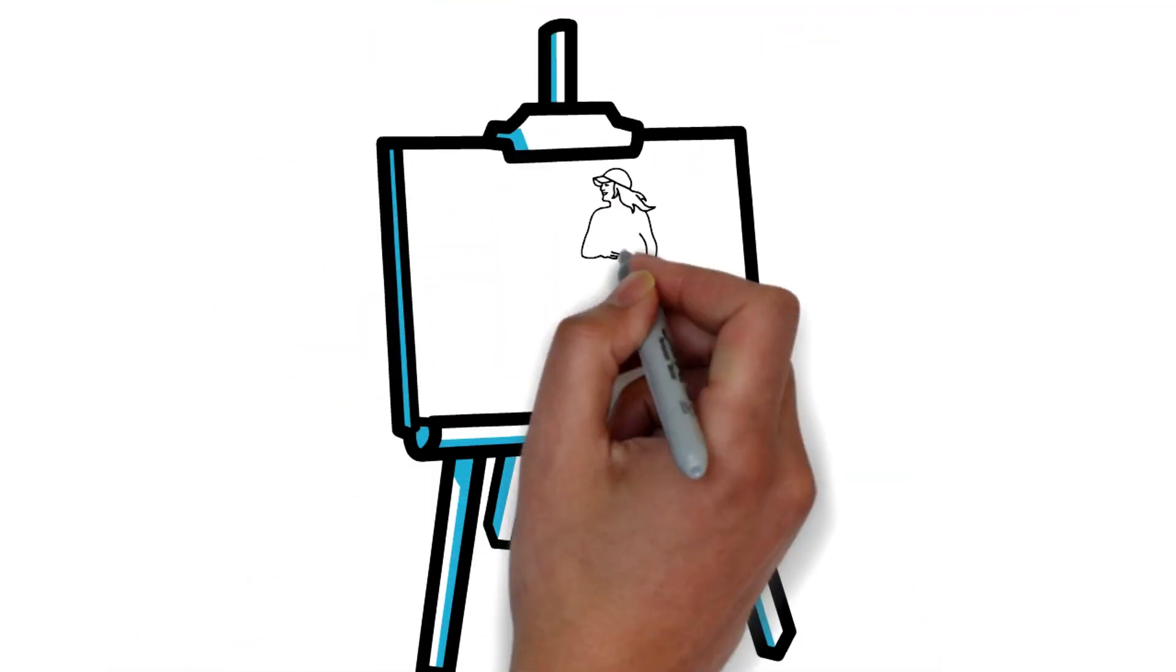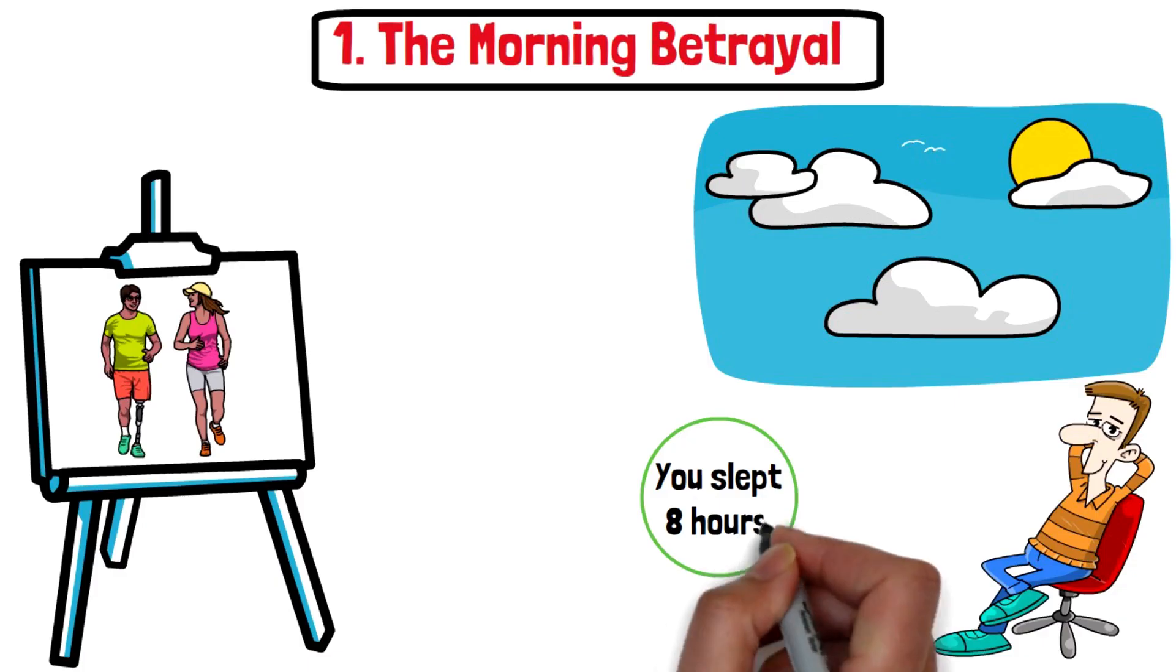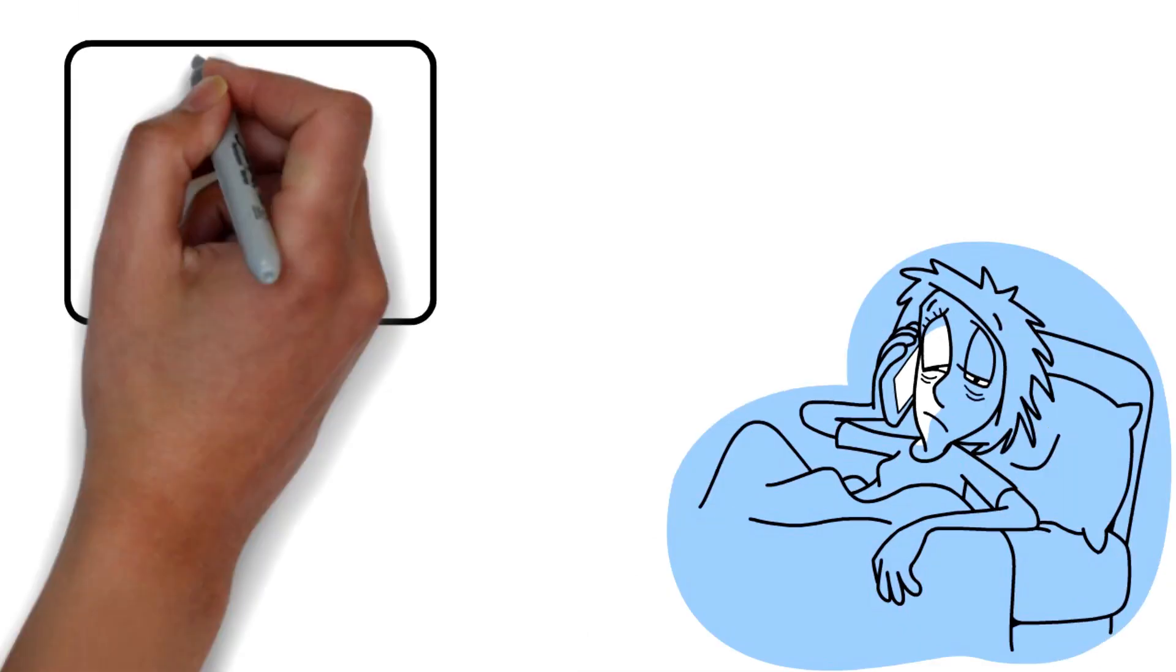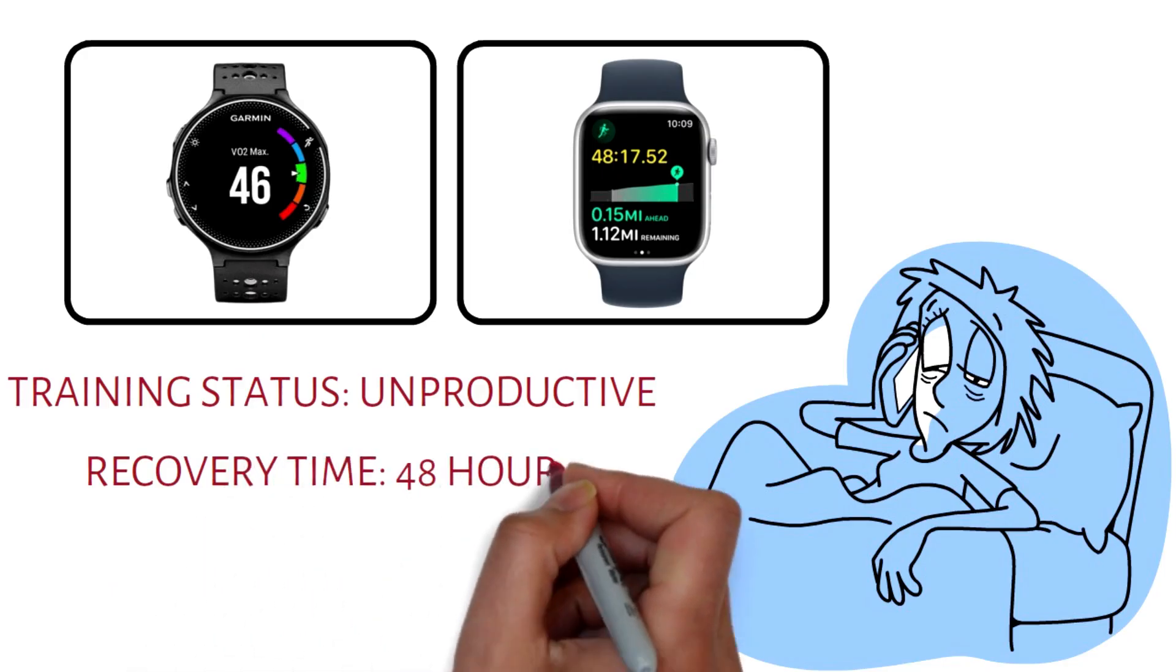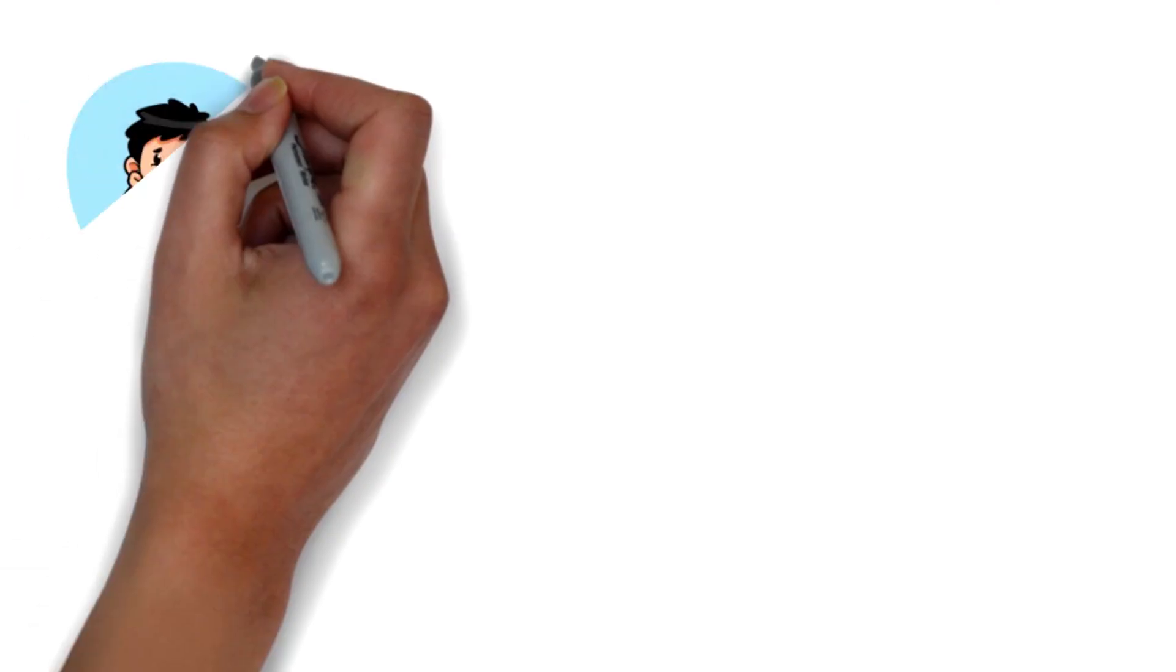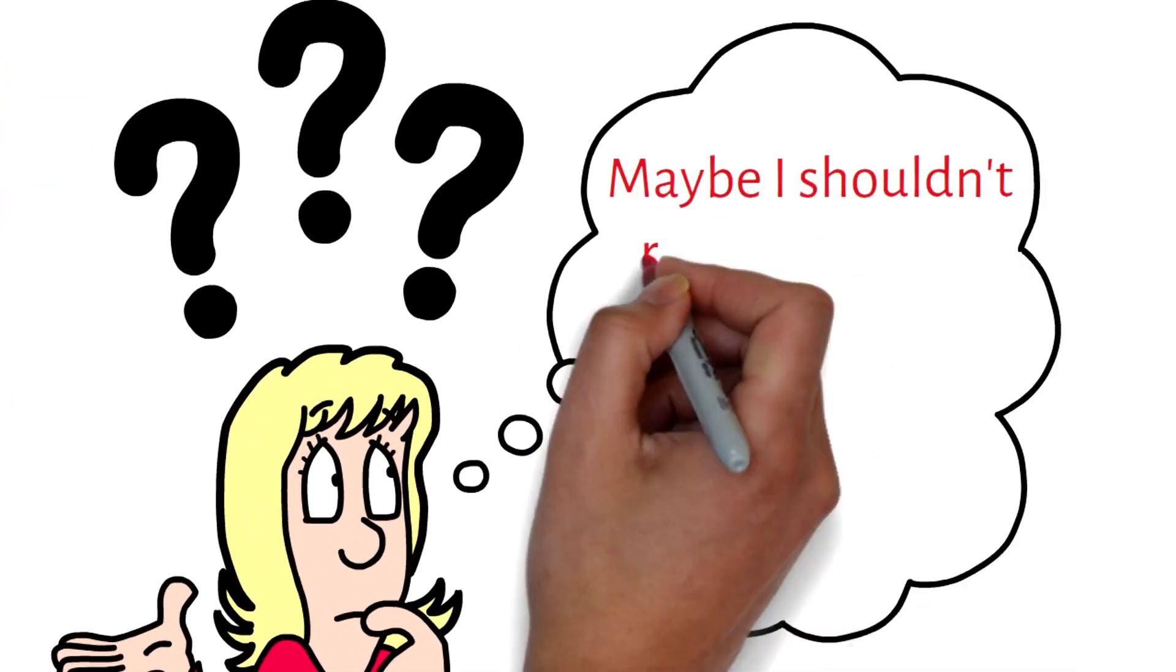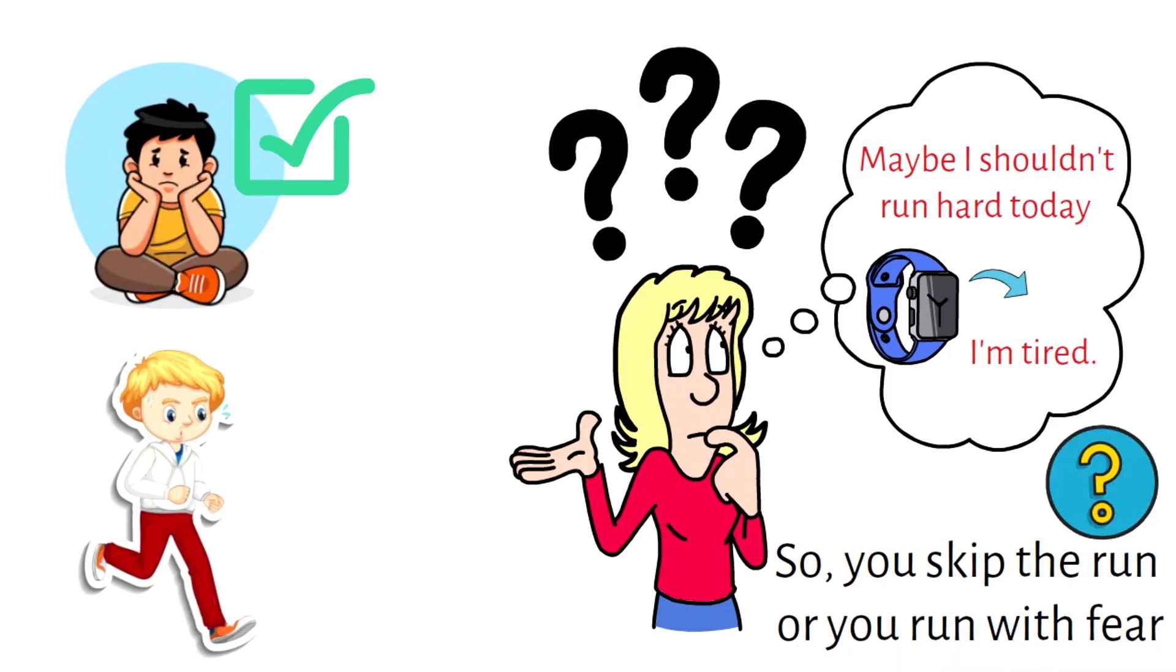One, the morning betrayal. I want you to picture this scenario: it's Sunday morning, you wake up feeling fantastic. You slept eight hours, your legs feel fresh, you're excited about your long run. You reach over to your nightstand, you put on your Garmin or Apple Watch, and you look at the screen. Training status: unproductive. Recovery time: 48 hours. HRV status: unbalanced. In one second, your mood crashes. You feel weak, you question yourself. Maybe I shouldn't run hard today. The watch says I'm tired, so you skip the run or you run with fear. You just let an algorithm steal your fitness.